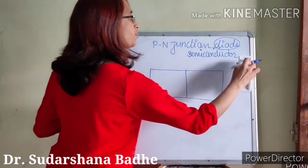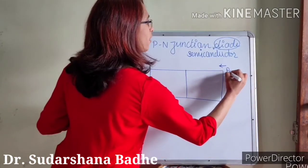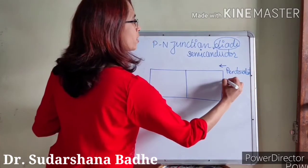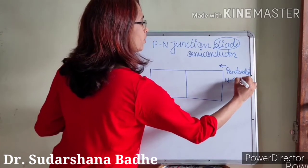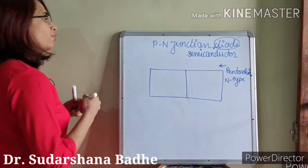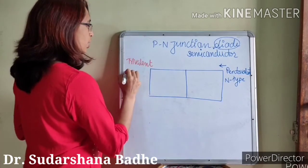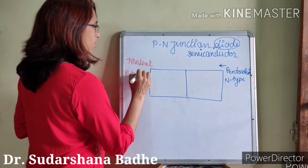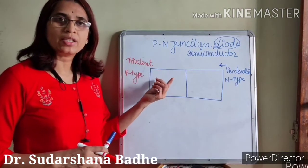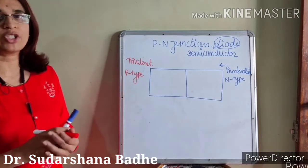From this side we add some pentavalent impurity, which gives us N type semiconductor, and from the other side we add some trivalent impurity, which gives us P type semiconductor. We know that in the P type semiconductor holes are the majority carriers, and in the N type semiconductor electrons are the majority carriers.